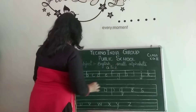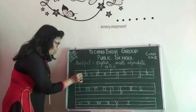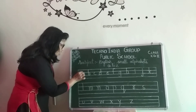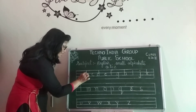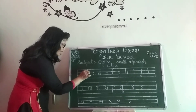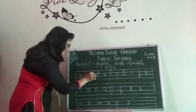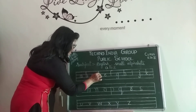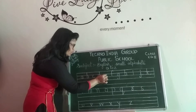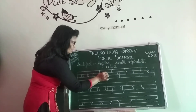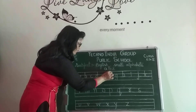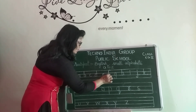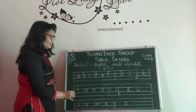Now we will learn small alphabet, A to Z. Let us start. Small A — we will write small A in two lines. And small B — we will write in three lines. Small C — write in two lines. Small D — also write in three lines. Small E — write in two lines. And small F — write in three lines. Like this. Write in proper line and send me.